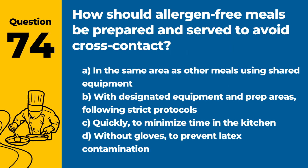Question 74. How should allergen-free meals be prepared and served to avoid cross-contact? Answer: B. With designated equipment and prep areas following strict protocols. Dedicated spaces and equipment help prevent cross-contact and ensure the safety of allergen-free meals.